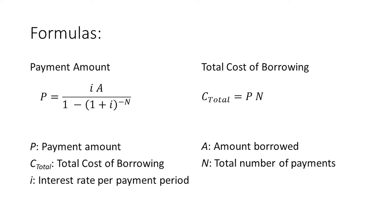The first formula requires that the interest rate be expressed per payment period rather than as an annual rate. It also requires that the rate be expressed as a raw number rather than as a percentage. This means that if the user enters an annual rate of 5%, then our variable needs to contain 0.05 divided by the number of payments per year. In this program I'll assume that we are making monthly payments, so the rate will be divided by 12.